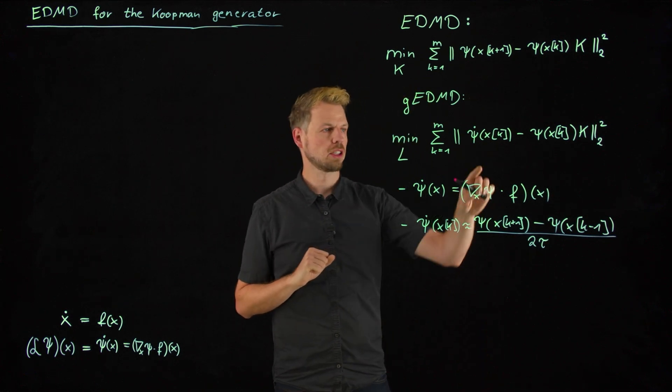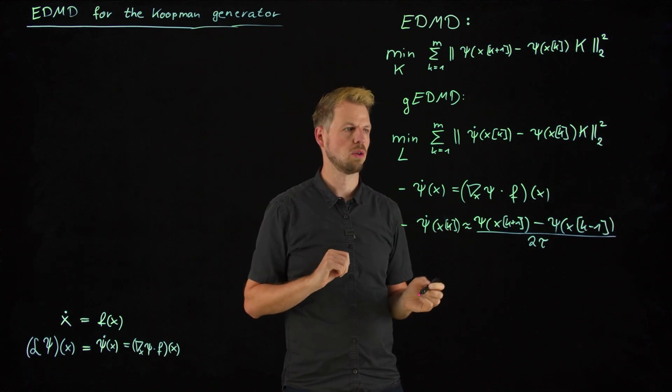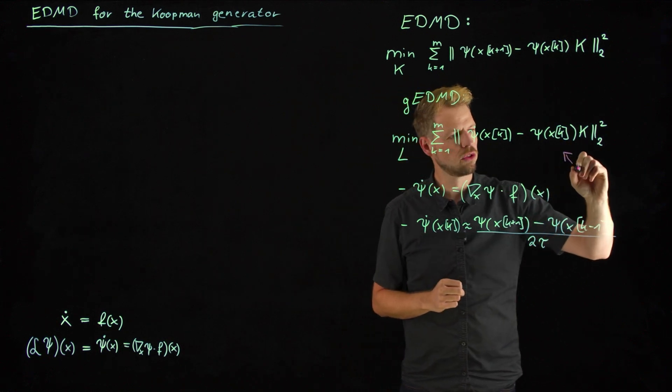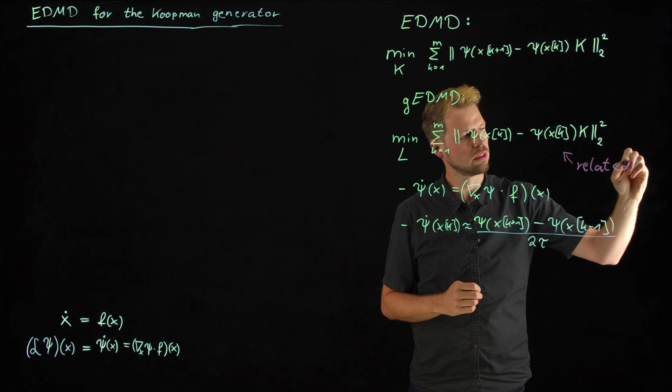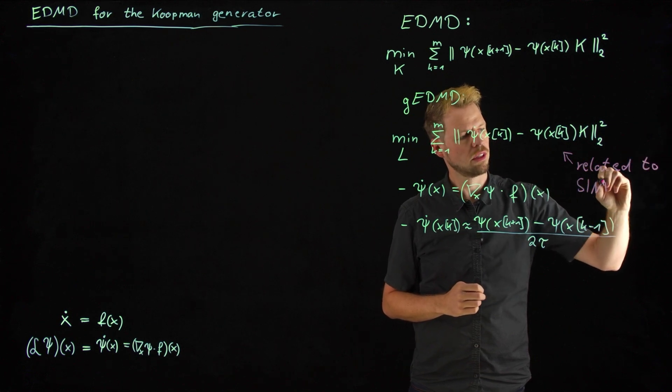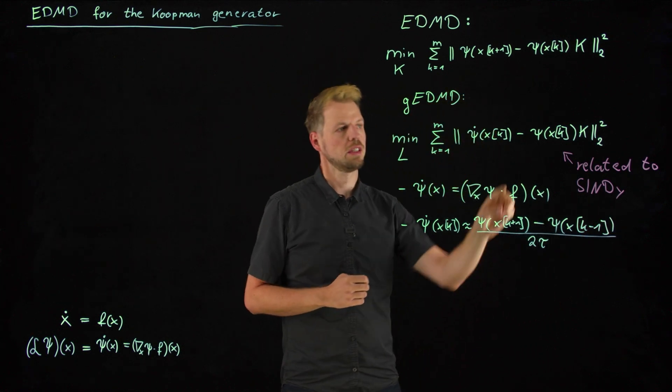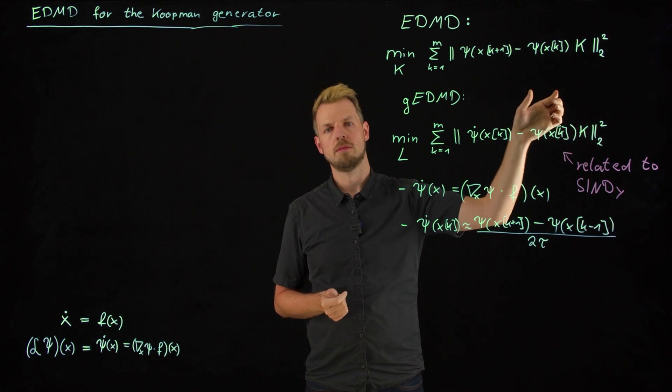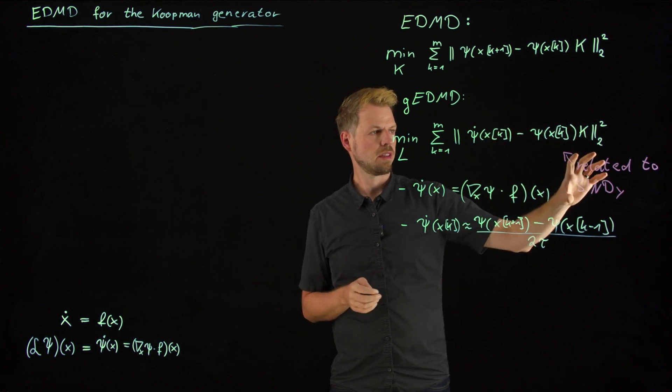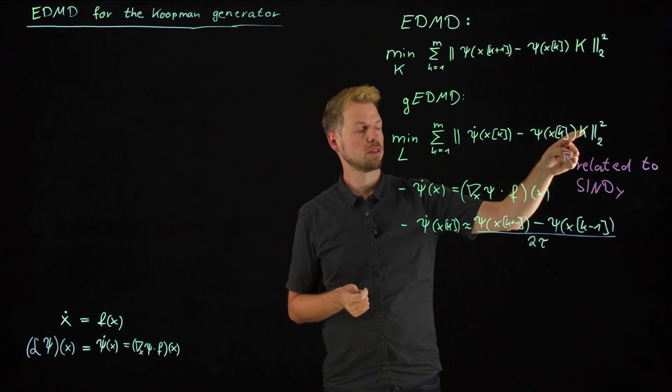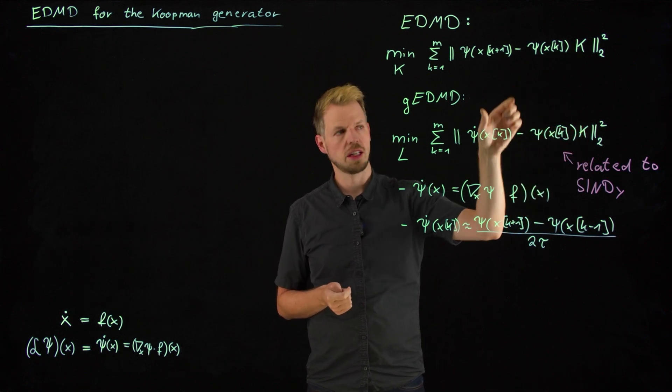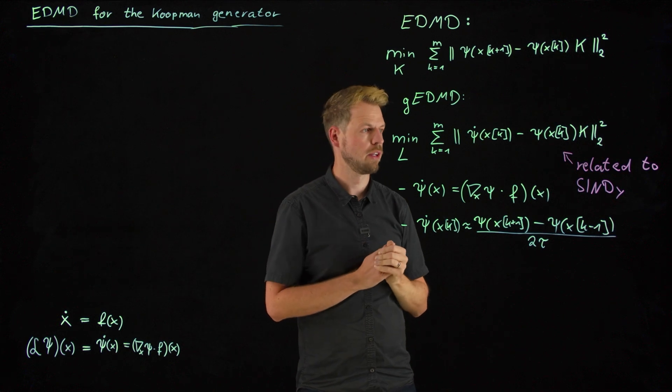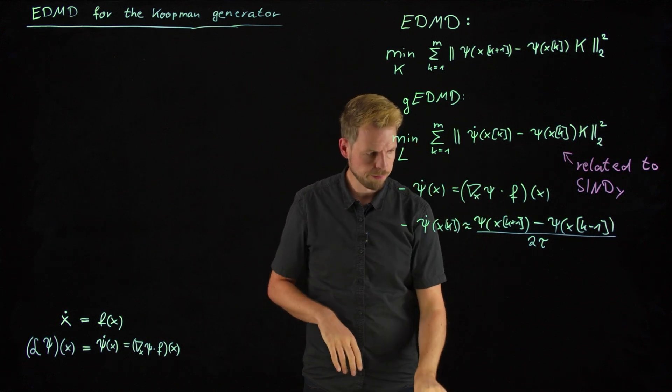One comment before we actually show how we can create a dynamic system, then look into the code. This problem is actually related to the very well known SINDy approach. So the sparse identification of nonlinear dynamics. What we're doing here is we're defining a dictionary, so a subspace, and then we want to find the linear operator that maps this lifted space to the time derivative. In the SINDy approach, very similar, we want to find coefficients that tell us how the right hand side has to look so that it gives us the derivative. But then we have to add a sparsity term in order to make this, the coefficient matrix sparse. But anyway, a close relation there.